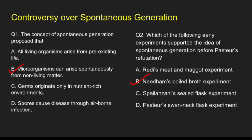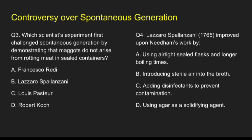Question 3: Which scientist's experiment first challenged spontaneous generation by demonstrating that maggots do not arise from rotting meat in sealed containers? Options: A, Francisco Redi; B, Lazarus Plansy; C, Louis Pasteur; D, Robert Koch. The correct answer is option A, Francisco Redi.